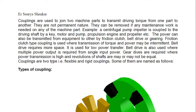Belt drive is also used where multiple power output is required from a single input power. There is a common question about why we don't directly couple the compressor — belts are used instead. Gear drives are required where power transmission is high and the revolution of shafts may or may not be equal.